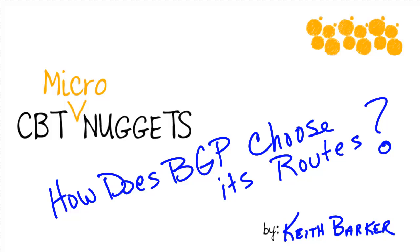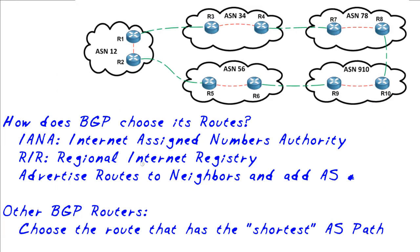How exactly does BGP, the Border Gateway Protocol, choose its routes? In this micro nugget we're going to do a brief overview of how the internet works with BGP, and then specifically take a look with an example at how BGP can choose the best routes when it's presented with more than one path.